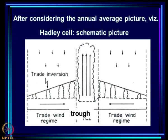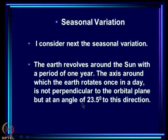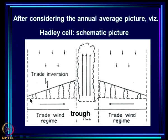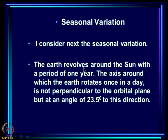We have so far focused on the annual picture, which comprises this trough region, the Hadley cell with ascent over the trough, descent in the surrounding region, convergence in the boundary layer, and divergence at higher levels. Next we have to look at how it varies with season.